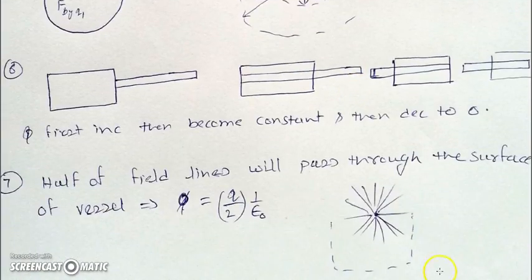Only half of the field lines will be able to enter the vessel and half will not. So we can assume that total contribution of the charge will be half of its value. Q by 2 epsilon naught will be the flux through the surface or through the vessel. Thank you.